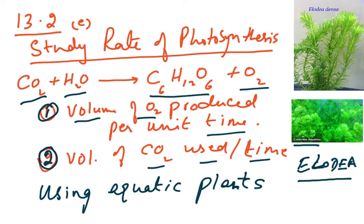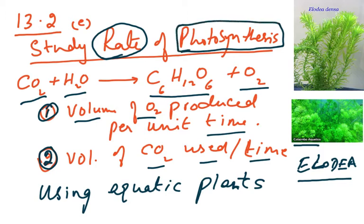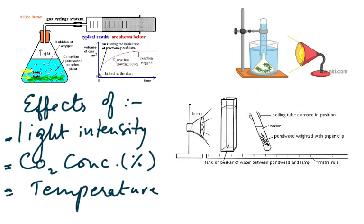The rate of photosynthesis can only be studied if we can measure either the bubbles of oxygen produced or the volume of oxygen produced per unit time. The three factors we have to investigate are: number one, light intensity; number two, carbon dioxide concentration; and number three, temperature.